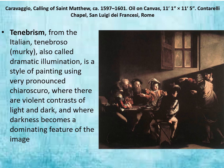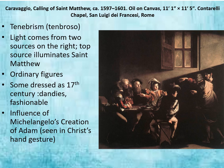There is a specific vocab term called tenebrism, from the Italian 'tenebroso,' meaning murky. This is very dramatic illumination—a style of painting using very pronounced chiaroscuro, where there is violent contrast of light and dark, and darkness becomes a dominating feature of the image. In the image 'The Calling of St. Matthew,' we do have that tenebroso quality. Light comes from two sources on the right, and the top source illuminates St. Matthew. You wouldn't know just upon glancing at this work that it is a religious scene because the figures are dressed in daily clothing in a humble space—not an ethereal or heavenly space.